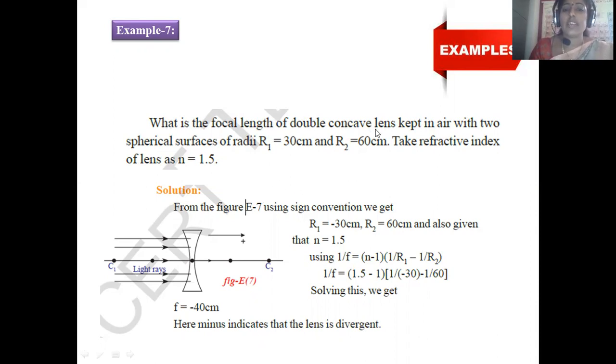What is the focal length of double concave lens? Most of the cases we discovered or discussed about convex lens, but here reciprocally they are asking about concave lens. What is the focal length of double concave lens kept in the air with two spherical surfaces? R1 equals 30cm, R2 equals 60cm. Take the refractive index of the lens as n equals 1.5.